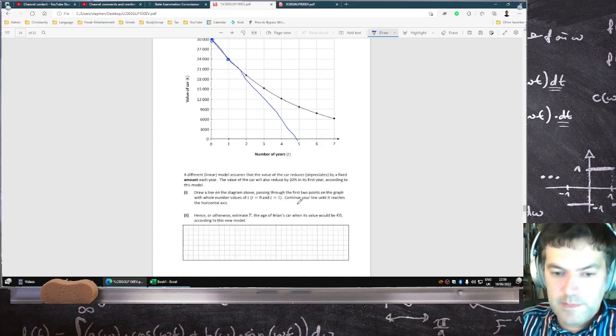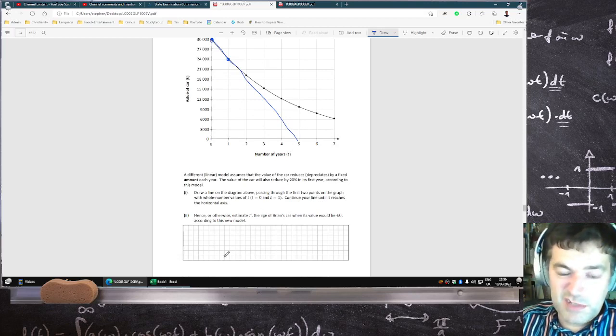Let's estimate the time to the age Brian's car where its value will be 0, kind of looking like a 5.